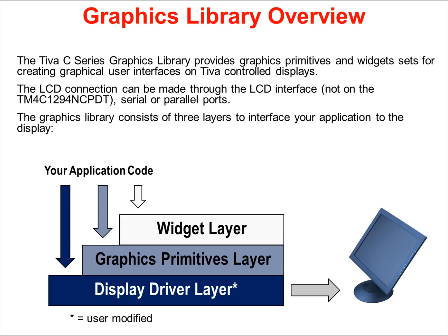The graphics library consists of three layers to interface your application to the display. At the very bottom is the display driver layer — you'll generally have to modify this code for your display selection. The middle layer is the graphics primitives layer for drawing additional pieces to the screen. At the very top is the widget layer. Widgets are for tying touch screen elements to code-based interaction, and your application code can interface with any of the layers.